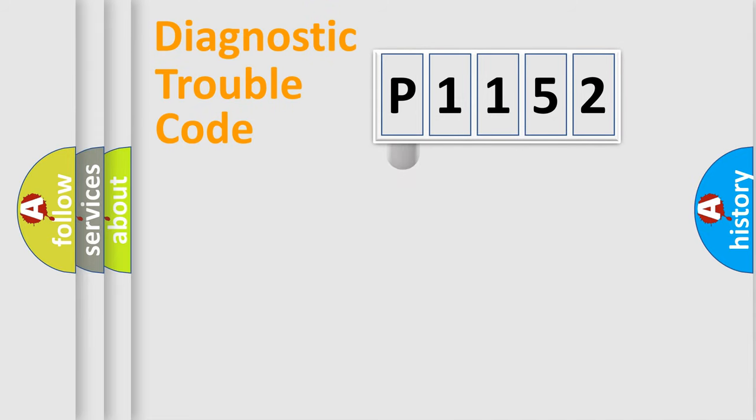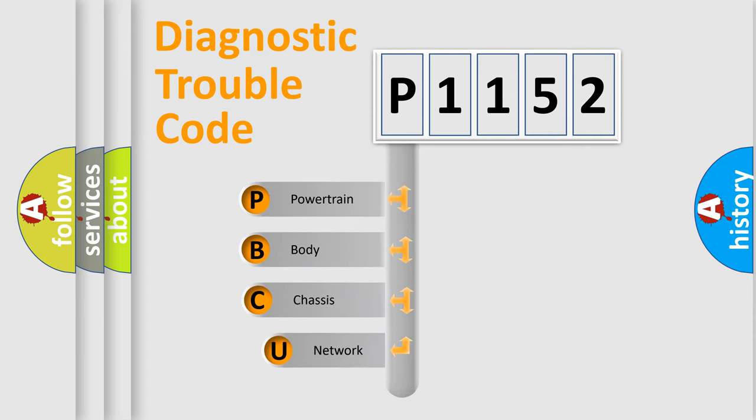First, let's look at the history of diagnostic fault code composition according to the OBD2 protocol, which is unified for all automakers since 2000. We divide the electric system of automobile into the four basic units.